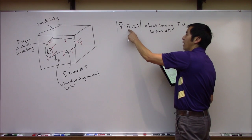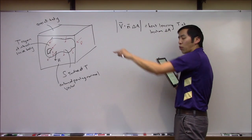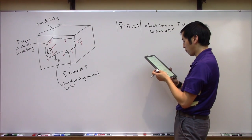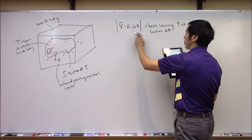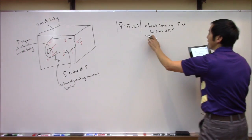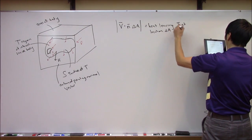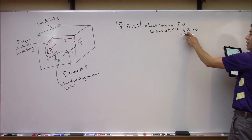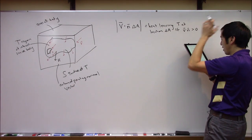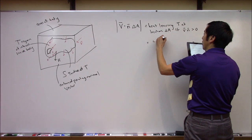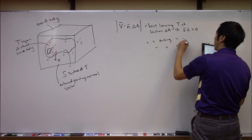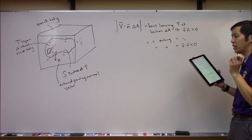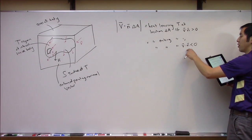We know it's leaving because n is the outward-pointing unit vector. If V dot n is greater than zero, the velocity of heat is roughly aligned with the outward-pointing normal, so heat is leaving. Conversely, if V dot n is less than zero, heat is entering T at that location. The sign of the dot product tells you which direction the heat is flowing.